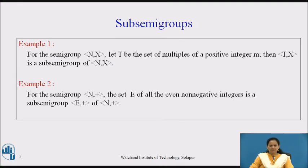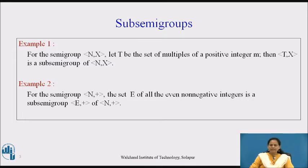Example 1: For the semi-group (N, ×), where N is the set of natural numbers and × is multiplication, let T be the set of multiples of a positive integer m. Then the algebraic structure (T, ×) is a sub-semi-group of (N, ×). Any multiplication of two multiples of m produces another multiple of m, so the result is contained in T — that is what we mean by closed under multiplication.